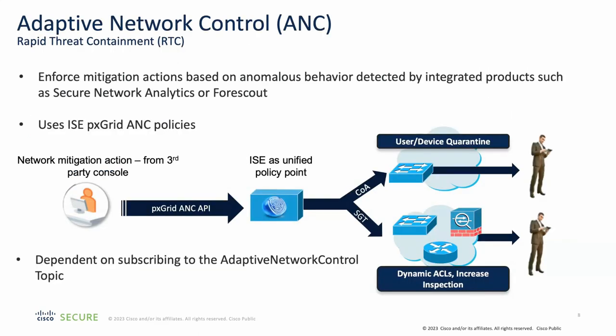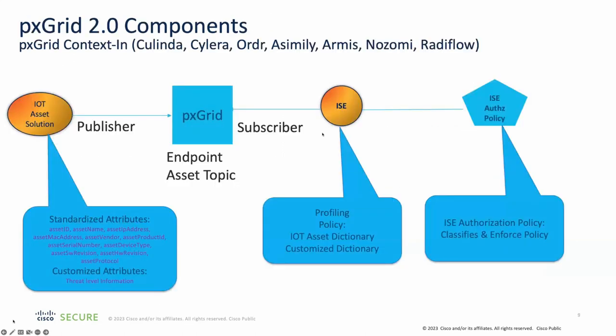Another common use case for PXGrid is Adaptive Network Control, or ANC, also called Rapid Threat Containment. External products such as Secure Network Analytics or Forescout can send an action to ISE to quarantine an endpoint if they detect malicious activity. The final use case is Context-In, which allows vendors that profile IoT devices — such as Ordr, Armis, Nozomi — to send information about IoT devices they find on the network to ISE, so that ISE can make intelligent authorization decisions based on that information.